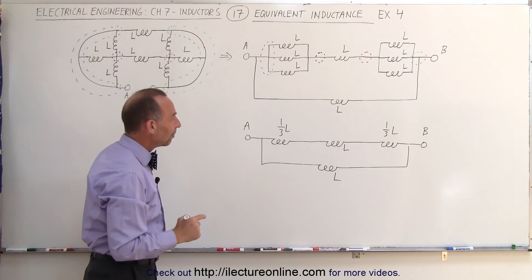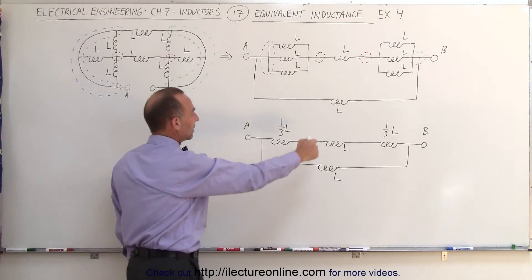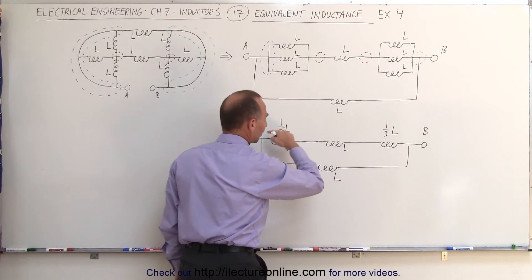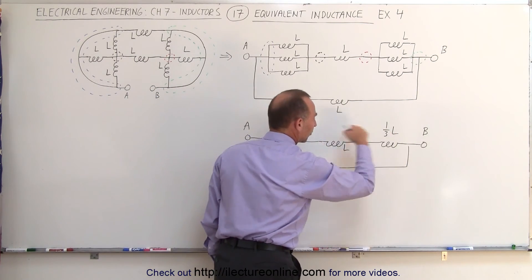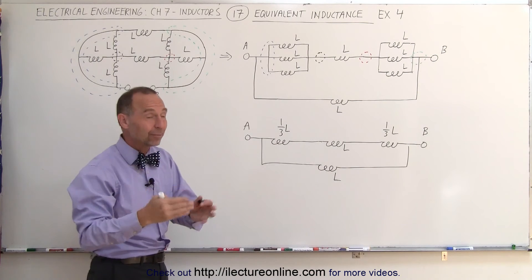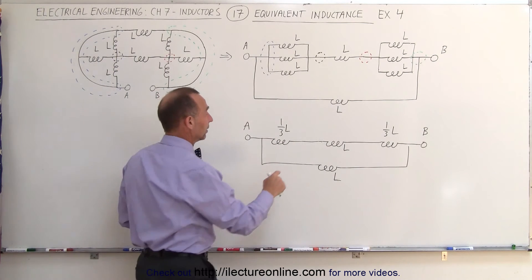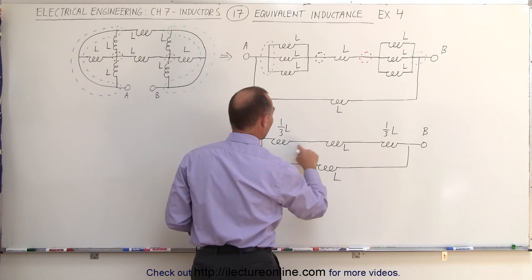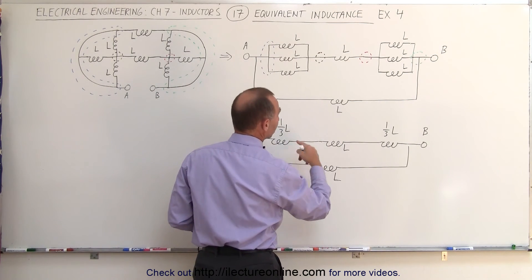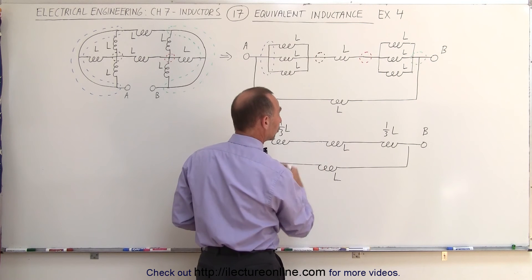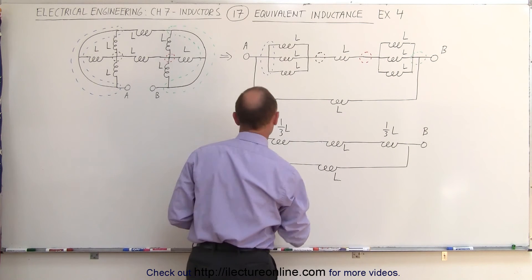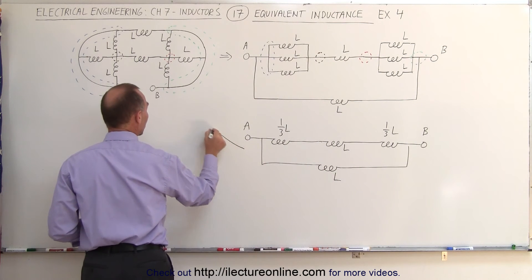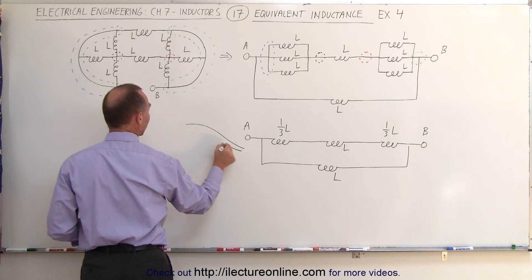The next step is to take this top branch right here and realize these are three inductors in series — we can simply add them together. So L plus one third plus one third: that's two thirds plus L.